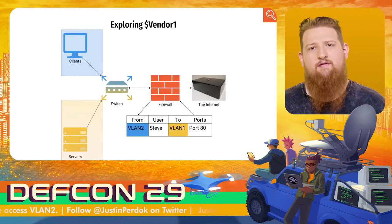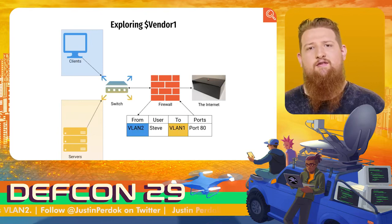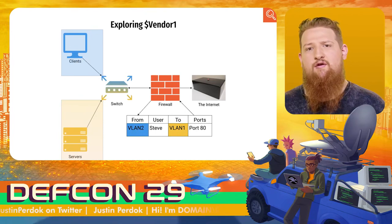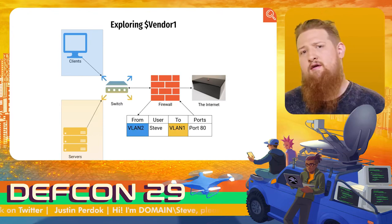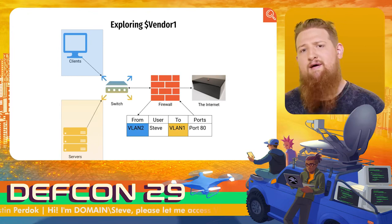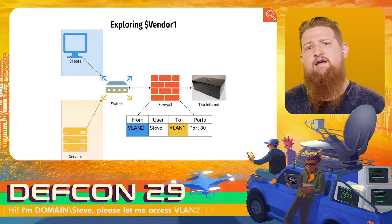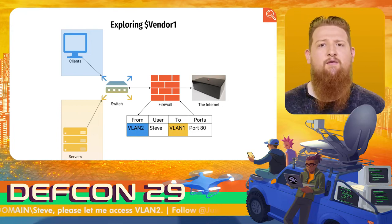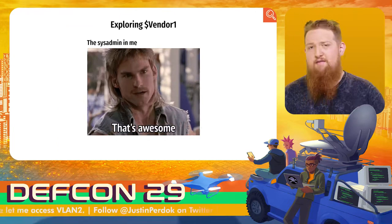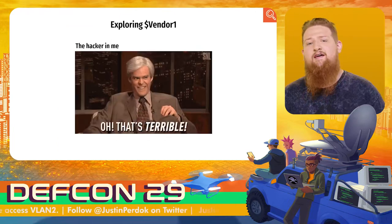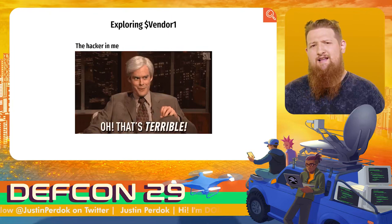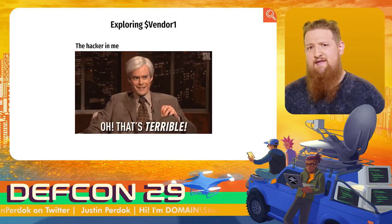By using this SSO feature, instead of relying on traditional segmentation, you could say a specific user in the blue VLAN is allowed to access a server in the yellow VLAN. Even though other users in the blue VLAN exist, they can't access that server, because the firewall figures out who is logged on to a client and dynamically assigns a firewall rule to that IP. After finding out this was a thing, I had two trains of thought. The sysadmin in me thought it was awesome. But the hacker in the back of my mind said: wait — we're going to trust clients to return truthful responses and base our segmentation around that? Seems like a bad idea.